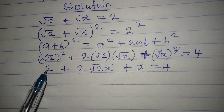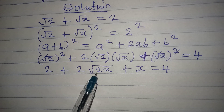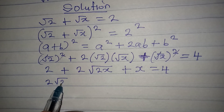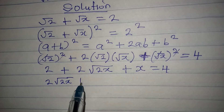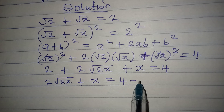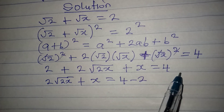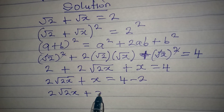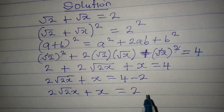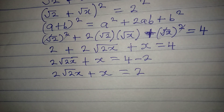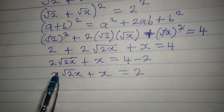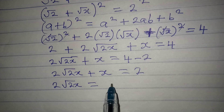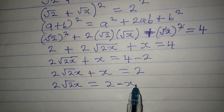We cannot add the 2 and the x because x belongs under the square root. But we can collect like terms: 2 root 2x plus x equals 4 minus 2, taking the 2 to the other side. So 2 root 2x plus x equals 2. Now let's make the radical term the subject: 2 root 2x equals 2 minus x.